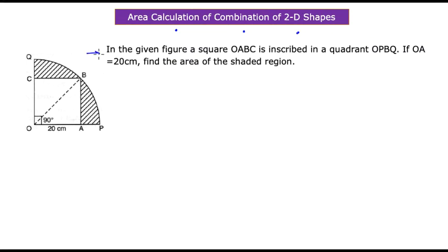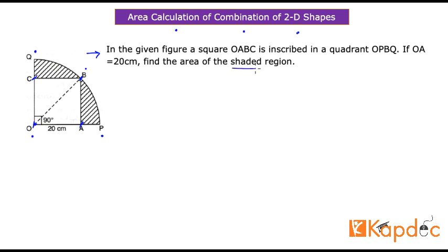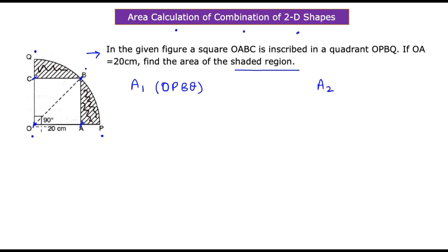In this scenario, square OABC is inscribed in a quadrant with vertices at O, P, B, and Q of a circle. We need to find the area of the shaded region. The approach is: if I know the area of the quadrant A1 (quadrant OPBQ) and the area of the square A2 (with vertices OABC), I simply subtract A2 from A1.